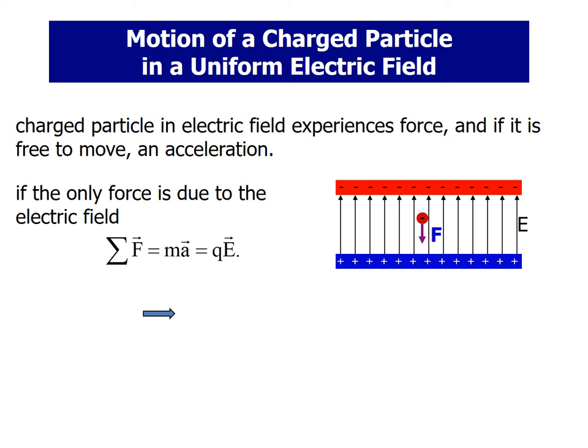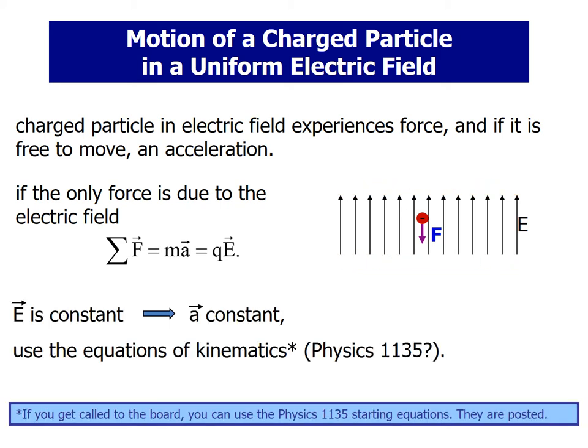You can see in the figures that there is a positive charge plate and a negative charge plate. E is constant, meaning the electric field is constant, so acceleration will be constant.